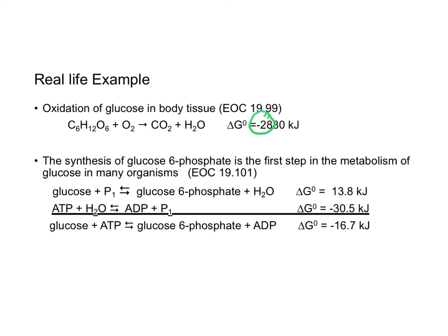The second example I have really is even better. It says the synthesis of glucose 6-phosphate is the first step in the metabolism of glucose in many organisms. So what I did is I wrote down the equation for glucose plus phosphate to give me glucose 6-phosphate and it has a positive delta G. If you couple that with the conversion of ATP going to form ADP plus that phosphate group what we have is a negative delta G.